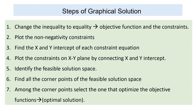The fifth step is to identify the feasible solution space. The feasible solution means a solution which can only satisfy the constraint equations. The sixth step is to find all the corner points of the feasible solution space. The last step is to determine which corner point optimizes the objective function — that is the optimal solution. The optimal solution is different from the feasible solution: feasible solution only satisfies the constraints, whereas the optimum solution satisfies the constraints and also optimizes the objective function.